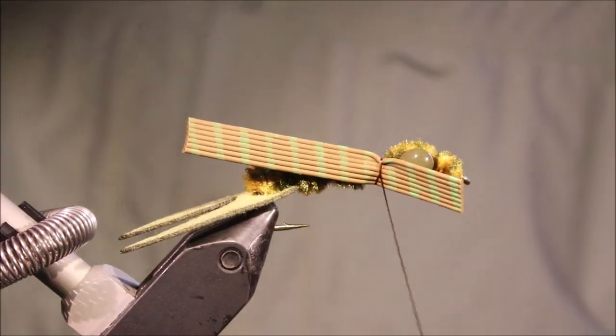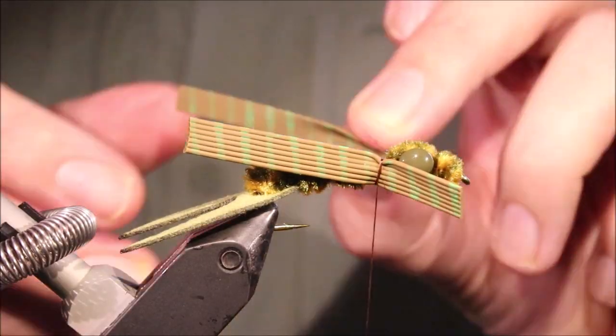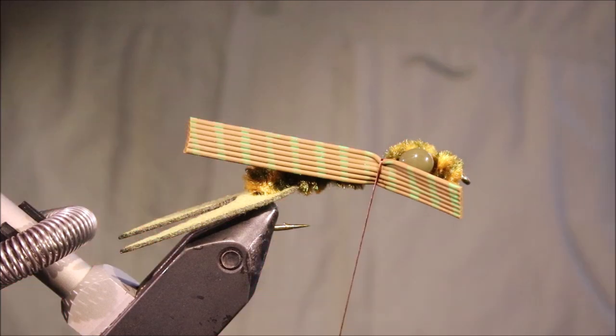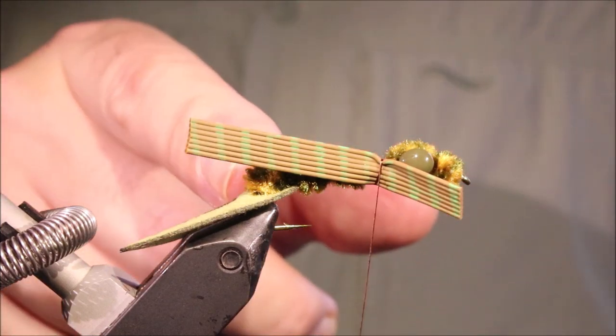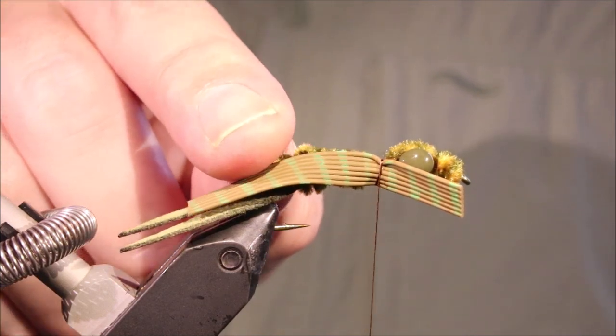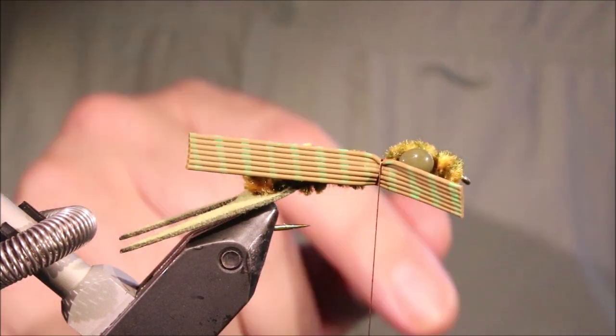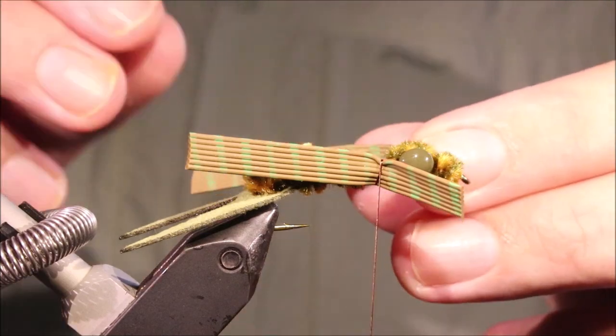Couple of loose wraps, just let it sit in there. And I want the long legs, the back legs, coming maybe half a shank length behind the hook, so they're coming halfway up the claw, that's how long I like them.